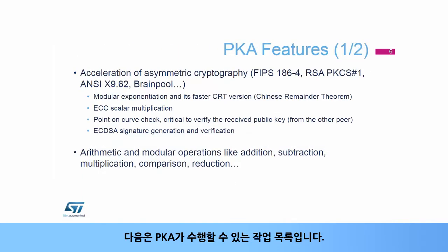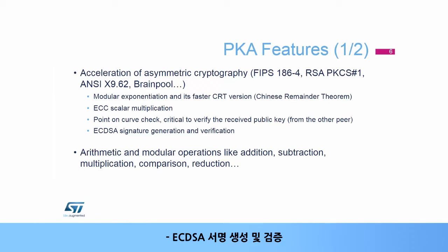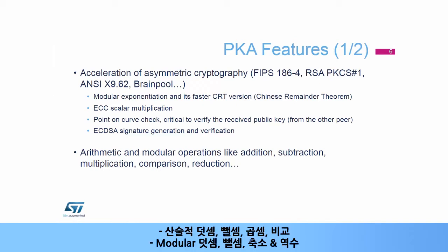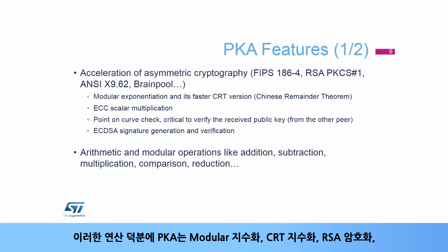Here is a list of operations the PKA can perform. For asymmetric cryptography acceleration: modular exponentiation, RSA Chinese Remainder Theorem (CRT) exponentiation, ECC scalar multiplication and point-on-curve check, and ECDSA signature generation and verification. For arithmetic and modular operations: arithmetic addition, subtraction, multiplication, and comparison; modular addition, subtraction, and reduction; modular inversion; and Montgomery multiplication.